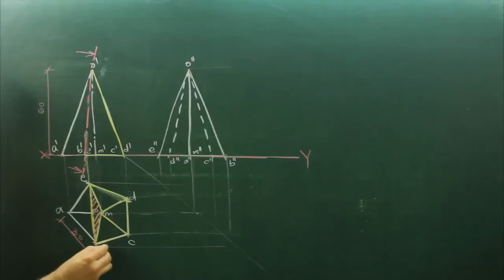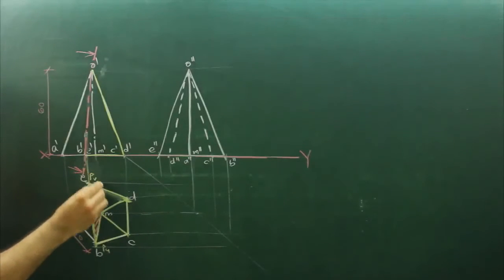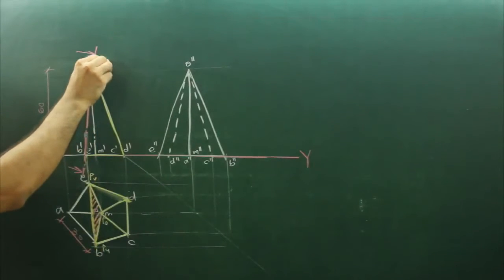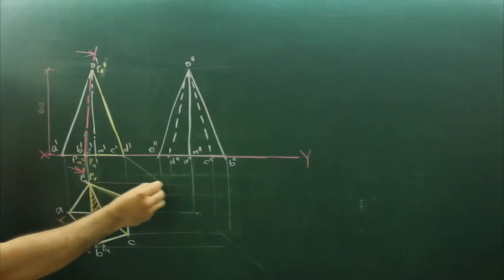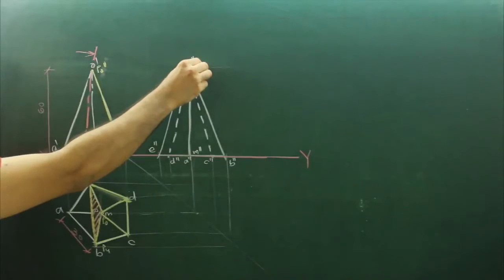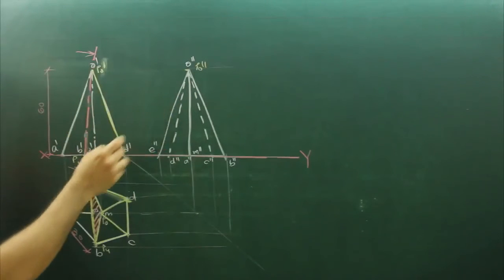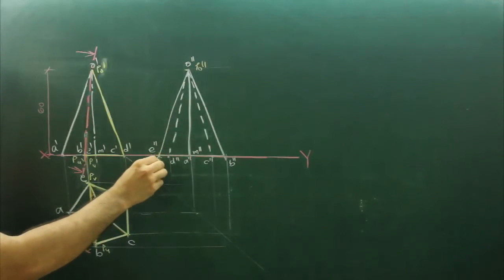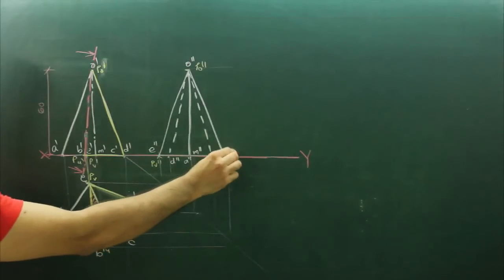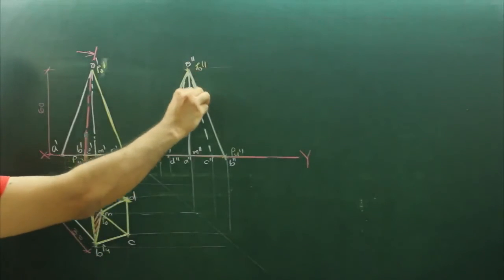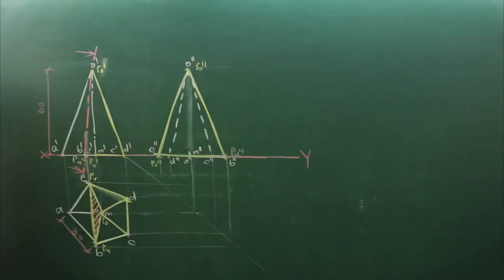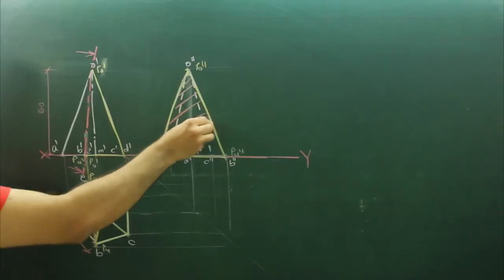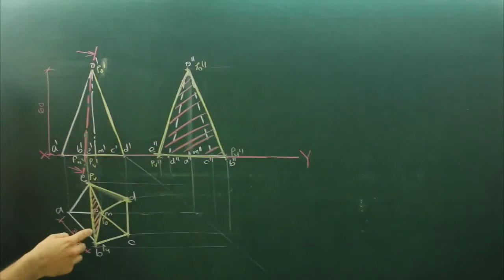So we got three points: PU, PV, and PO. This is PO double-dash, and here we got PU-dash and PV-dash. Now we will project these points. PO-dash becomes PO double-dash, PV gives PV double-dash, and PU gives PU double-dash. This entire portion will be removed and this will be hatched. So we are done with the sectional top view and sectional side view.